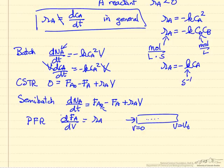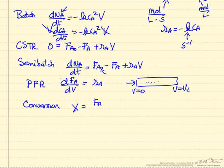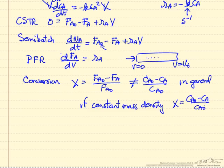The final term we'll mention is we often use conversion to determine how much is reacted. The conversion is the flow rate coming in, a molar flow rate, minus the flow rate leaving over the flow rate coming in. This in general is not equal to the concentration difference, but if we have constant mass density, then it is.